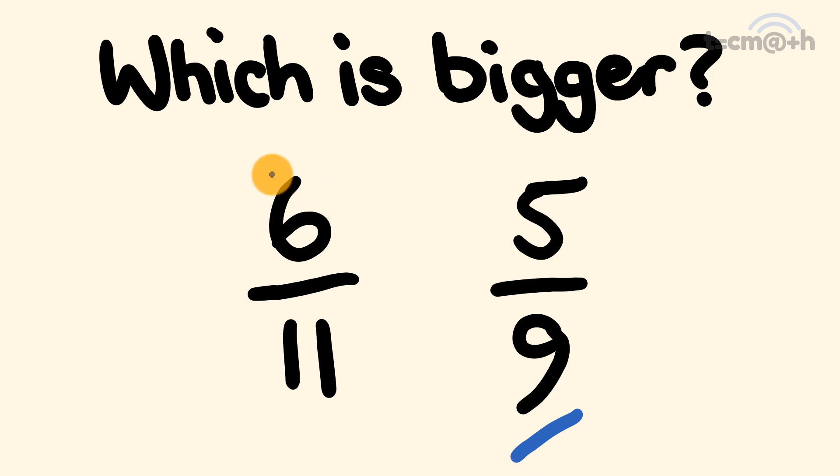We're going to start with our left-hand fraction. Start with the top number, the numerator, and multiply it by our right-hand fraction's denominator. So 6 times 9 equals 54. Now we do the opposite. Go to our right-hand fraction's numerator and multiply it by the left-hand fraction's denominator. 5 times 11 is 55.